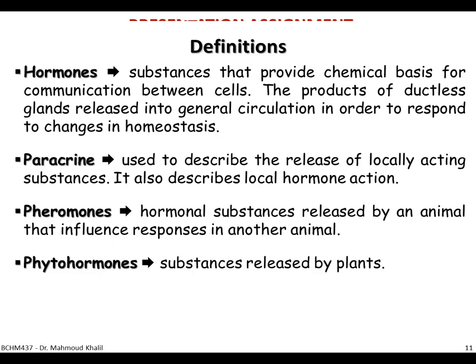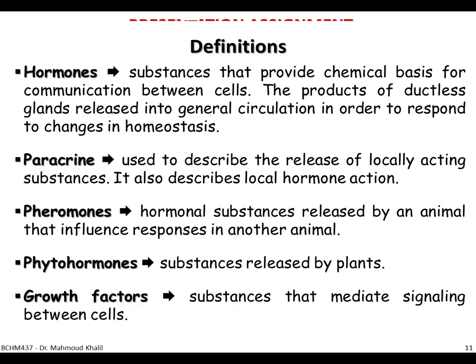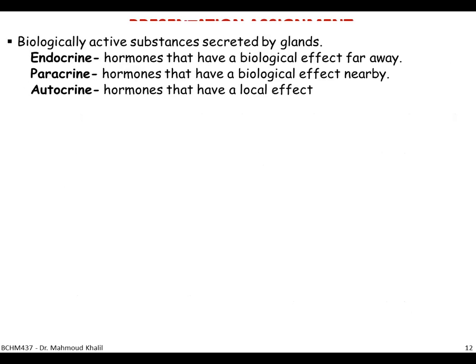Phytohormones are the corresponding hormones in plants. Growth factors are compounds or molecules that aid and help in signaling between cells. Biologically active substances can be secreted in an endocrine, paracrine, or autocrine manner. Endocrine hormones have a biological effect far from the source of secretion, paracrine hormones act locally near the secreting cells, and autocrine hormones are secreted and have a local effect on the same cell type that secreted them.